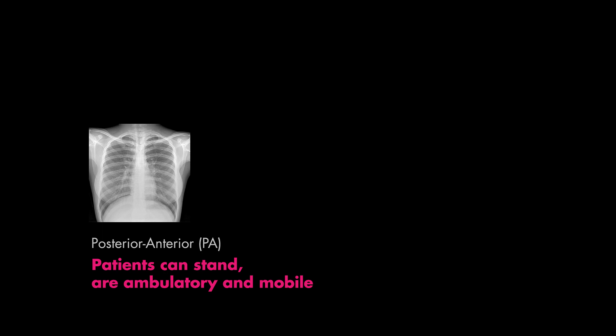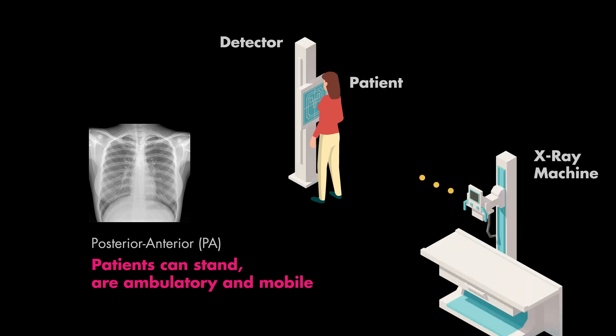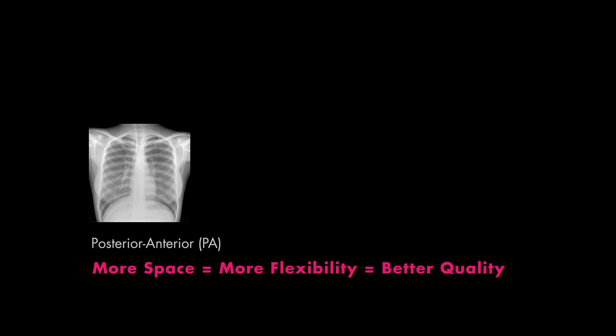When these films are shot, the patient's back is facing the x-ray machine and the x-ray detector is in front. X-rays come from behind, pass through the patient from back to front, and onto the x-ray detector. This extra space and flexibility in a posterior-anterior film allows the x-ray technician more freedom and mobility to position the patient as needed without any external distractions.